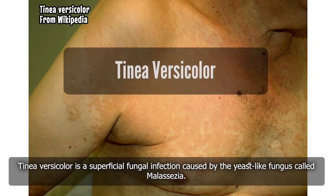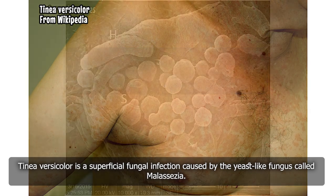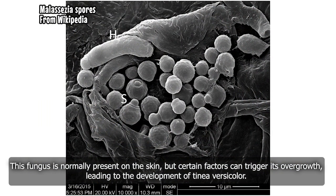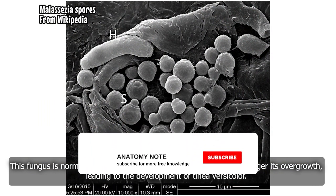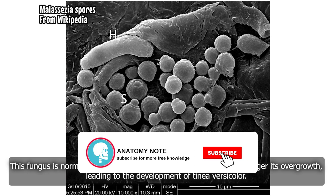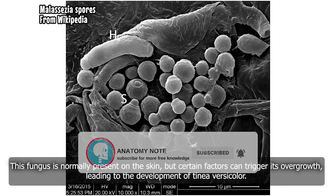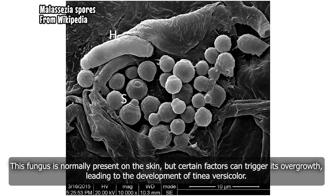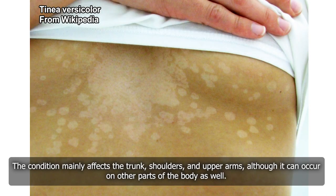Tinea versicolor is a superficial fungal infection caused by the yeast-like fungus called Malassezia. This fungus is normally present on the skin, but certain factors can trigger its overgrowth, leading to the development of tinea versicolor. The condition mainly affects the trunk, shoulders, and upper arms, although it can occur on other parts of the body as well.